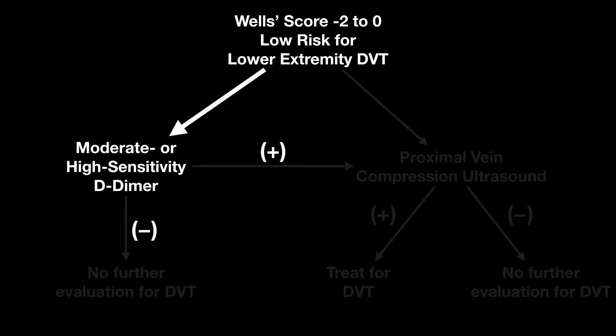We're going to discuss first what we do with a low-risk lower extremity DVT patient. So they present — maybe that's a young, healthy person with no real medical problems, no family history. Your Wells score ends up being negative two to zero, and you're still concerned about a DVT. The first thing the guidelines recommend is to do a moderate or high sensitivity D-dimer. In this case, for low-risk patients, you can use a moderate sensitivity D-dimer.